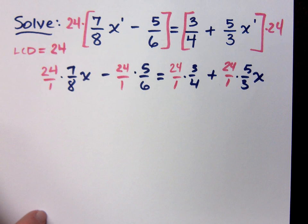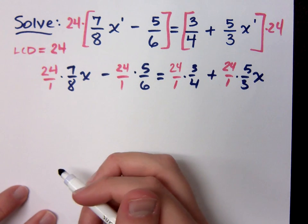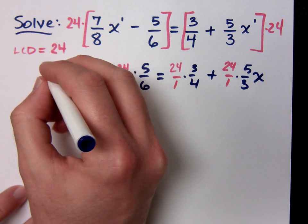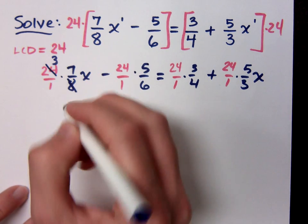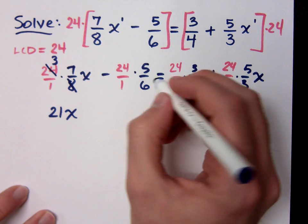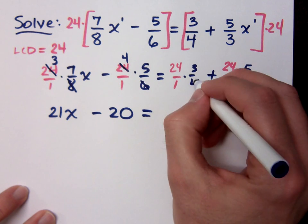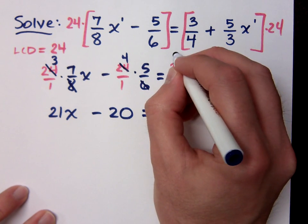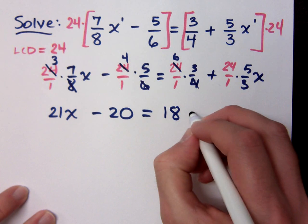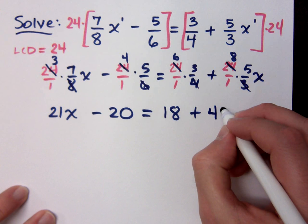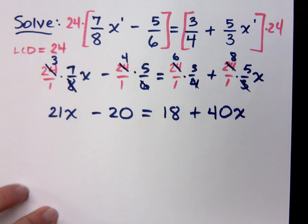Now reduce this. All of the denominators should simplify away if 24 truly is a common denominator. The 8 reduces with the 24 to give me 3, so I get 21x. Then minus — 4 reduces to give me 6, so I get 18 — plus 3 reduces to give me 8, so I get 40x.